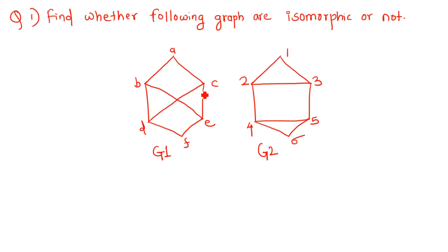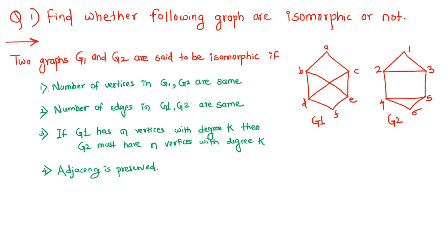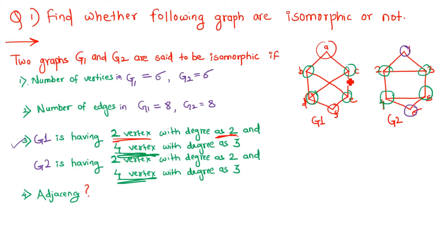For example, we have to find whether these two graphs G1 and G2 are isomorphic or not. We will go through all four conditions. First condition: the number of vertices in both graphs. In graph G1, we have six vertices, and in graph G2, we also have six vertices. So the graphs have the same number of vertices — the first condition is satisfied.